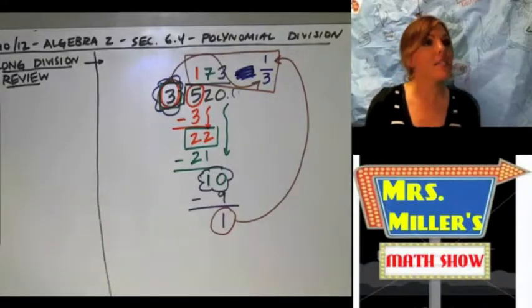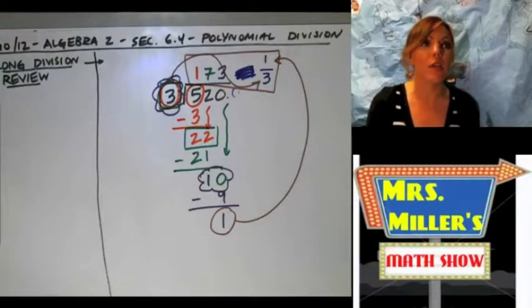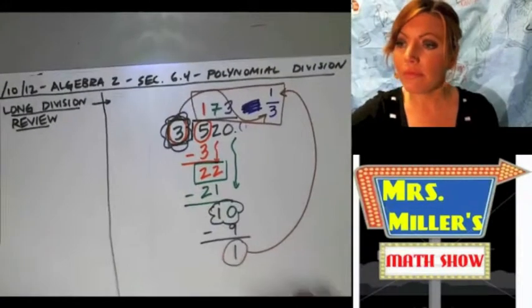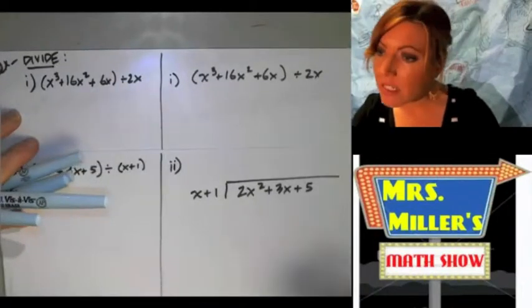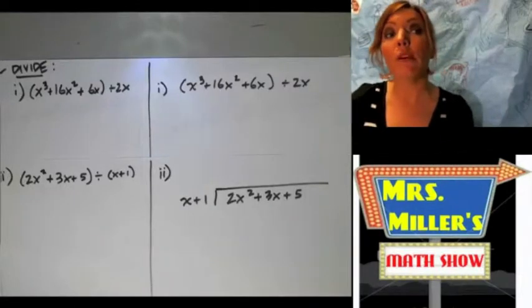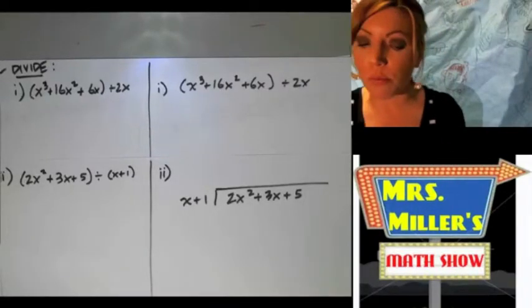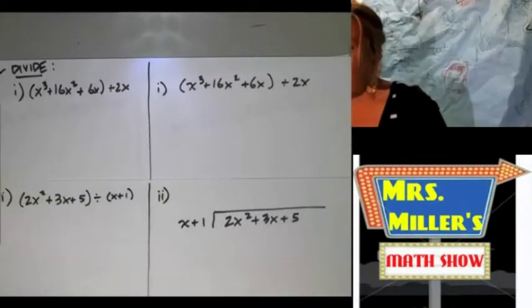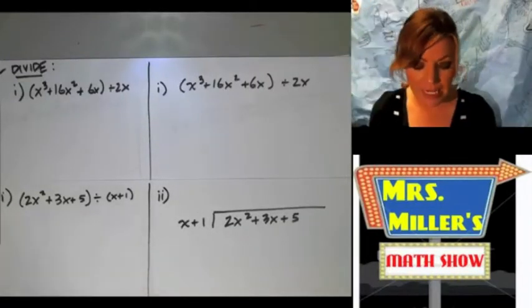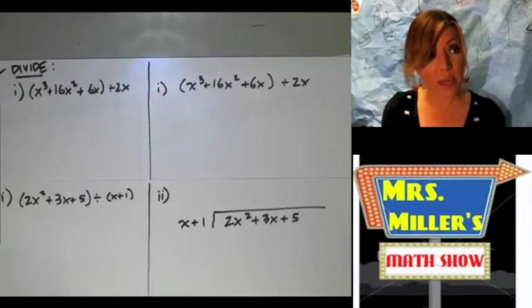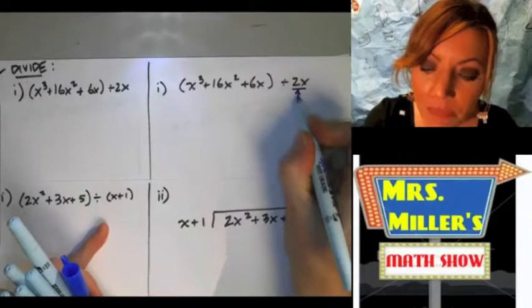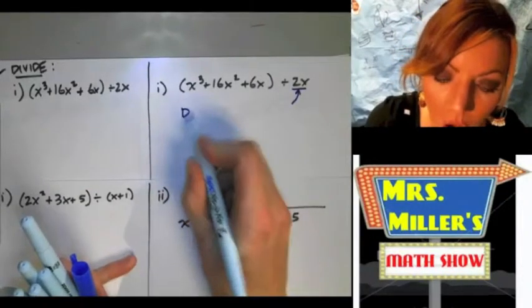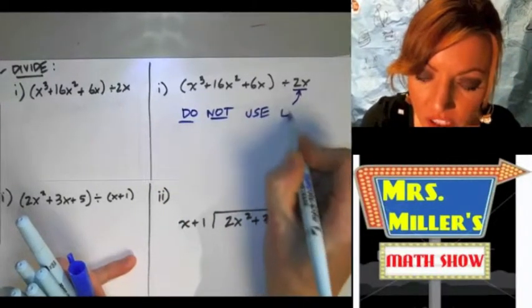Keep that process in your head because we're going to focus on this a lot today, but with polynomials instead of numbers. Now let me put up two separate problems because even though they look similar, they are done quite differently. The first one: we actually do not have to use long division with every single polynomial division problem. What we have here is x cubed plus 16x squared plus 6x divided by 2x — what's on the right-hand side, what it's being divided by, is a monomial.